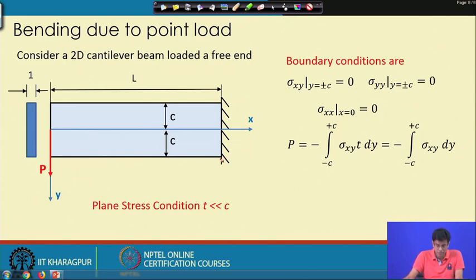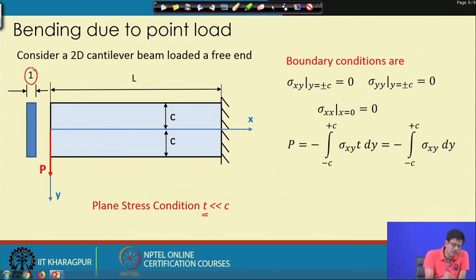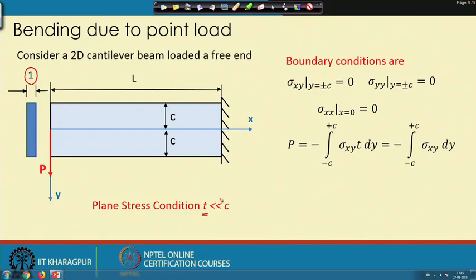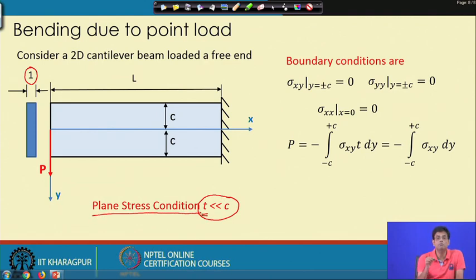The beam is ideally three-dimensional, but we consider the two-dimensional case where the thickness is much less than the depth of the beam, which is 2c. To simplify calculations, we take thickness T = 1 unit. This condition invokes plane stress.